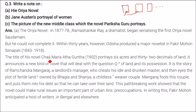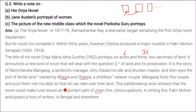Fakir Mohan Senapati's novel of 1902 portrays six acres and 32 decimals of land, announcing a new kind of novel dealing with the question of land and its possession. It is the story of Ramachandra Mangaraj, a landlord's manager who cheats his idle and drunken master and eyes the plot of fertile land owned by Bhagiya and Sharia, a childless poor couple. Mangaraj fools this couple, putting them into his debt so he can take over their land. This path-breaking work showed that the novel could make rural issues an important part of urban preoccupations.